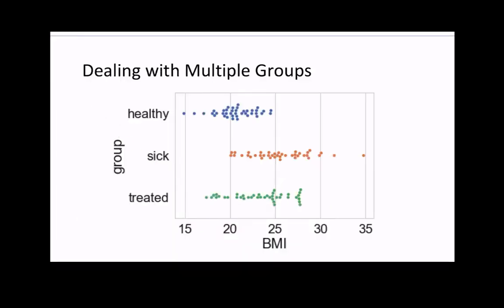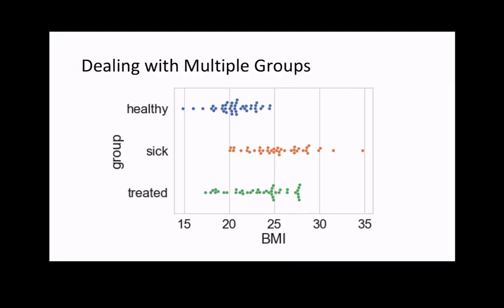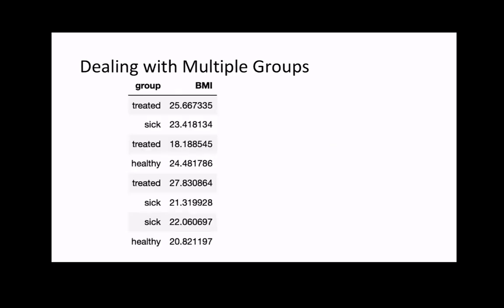The cool thing about this approach is that we can easily extend this to multiple categories. Suppose I want to compare the body mass index across three different groups: a healthy group, a disease group without treatment, and a disease group with treatment. To encode this as a linear regression, we can create two contrasts. For instance, I can look at the difference between the healthy group and the disease group with treatment.